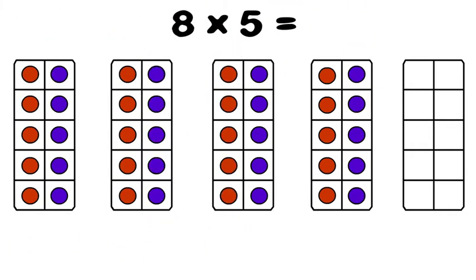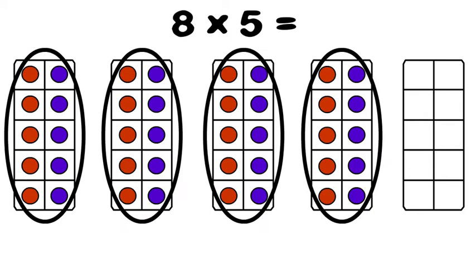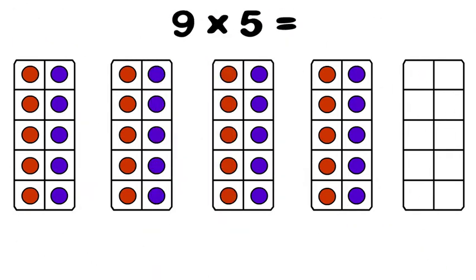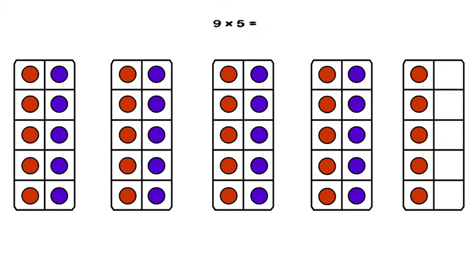Look, you can see that eight groups of five is the same as four groups of ten. So eight times five is 40. Nine times five, that is five more than 40, so nine times five is 45.